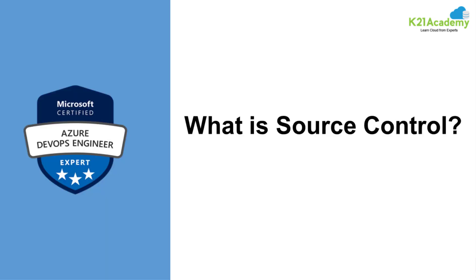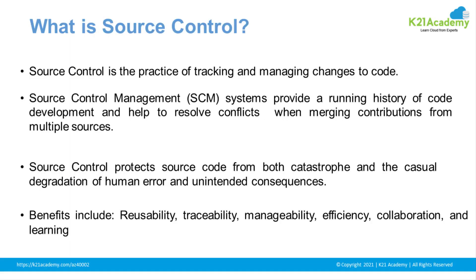A version control system is used for tracking and managing changes to code. It helps you find out who changed the code, when it was changed, what the previous version was, and what the next version is. It provides a running history of code development and helps resolve conflicts when merging contributions.